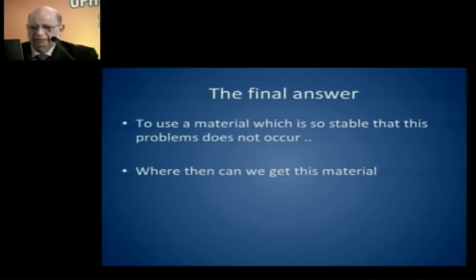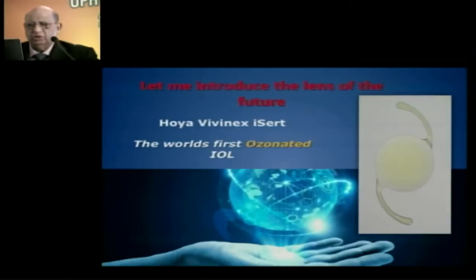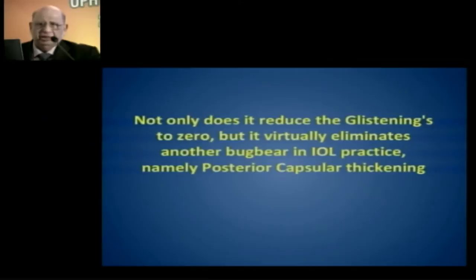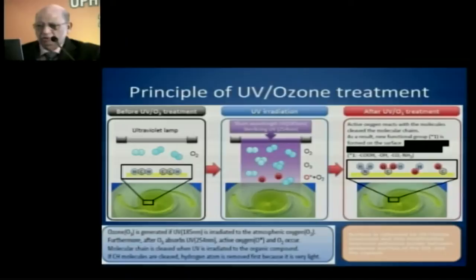The final answer is to use a material so stable that this problem does not occur. That is where the Hoya lens comes in — the world's first ozonated IOL whose posterior surface is coated. This lens not only reduces glistenings to zero but virtually eliminates another bugbear in IOL practice: posterior capsular thickening. If we can eliminate these two main headaches, almost all lenses are good — but this one is significantly better.